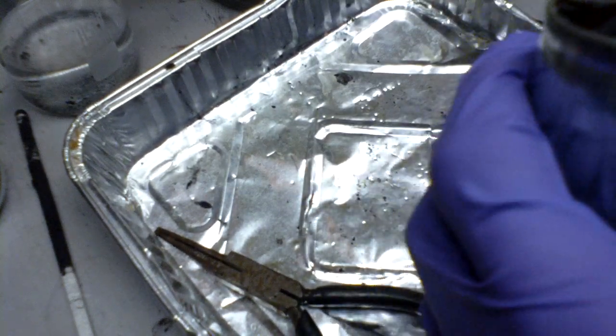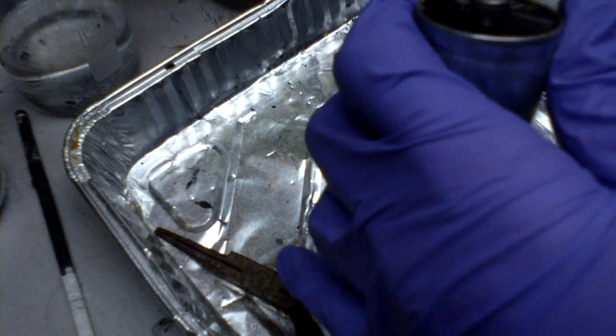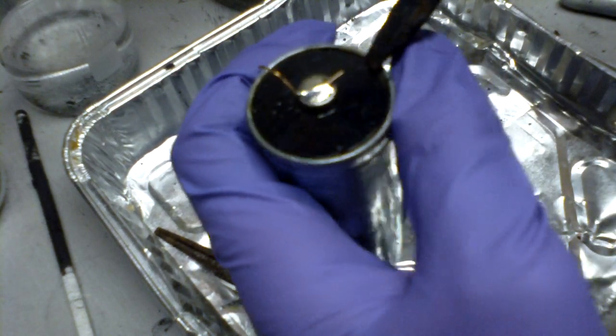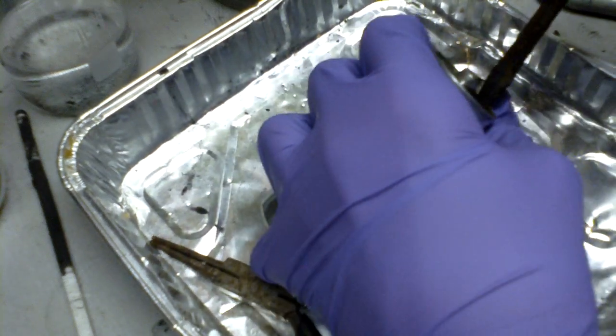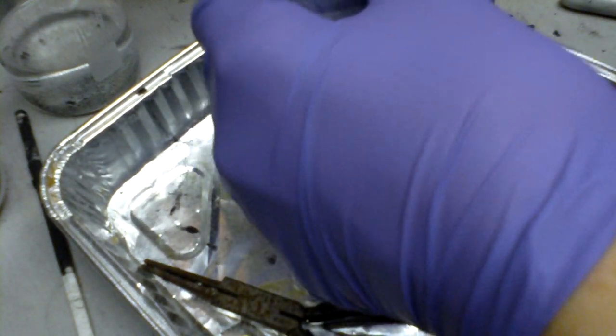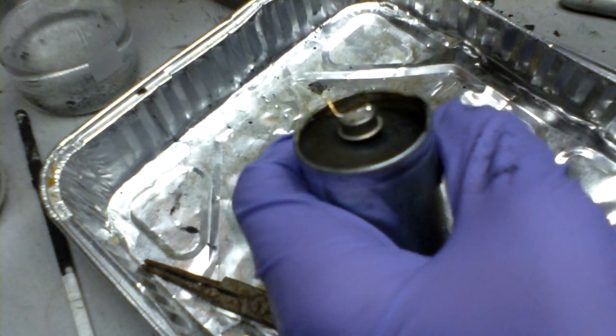Now in order to take apart the battery, the first thing you're going to have to do is put on safety glasses. And then you have to pop off the black seal with a screwdriver. There you go, it's off.